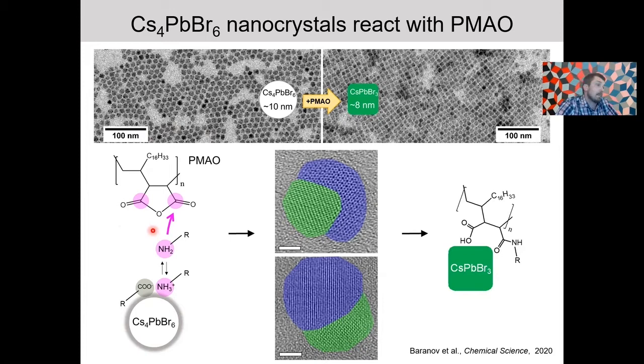PMAO, and PMAO is a copolymer of octadecene and maleic anhydride, and upon addition of this copolymer to the dispersion of zero-dimensional nanocrystals, they interconvert into perovskite ones over several minutes or tens of minutes, depending on the reaction conditions.